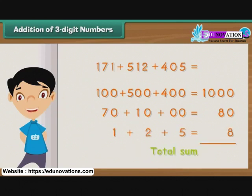Now we need to add 1000, 80, and 8 to get the sum of 171, 512, and 405. The result of the addition is 1088.